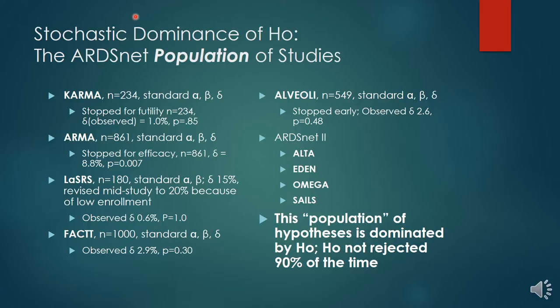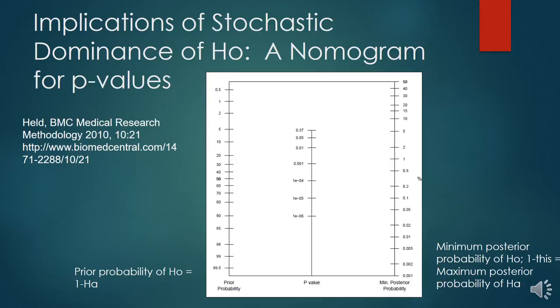To demonstrate stochastic dominance of the null hypothesis in a way poignant to critical care practitioners, I'll use the ARDSNet population of studies. We can compile them as a cohort because they involve the same disease, mainly the same investigators, using the best state of knowledge when designed. The trials include KARMA, ARMA, LAZARUS, FACT, ALVEOLI, ALTA, EDEN, OMEGA, and ALTA. The only trial in which the null hypothesis was rejected is, of course, ARMA — low tidal volume ventilation. This population of hypotheses is clearly dominated by the null hypothesis, which is not rejected 90% of the time.